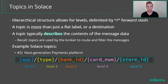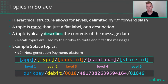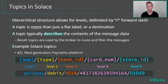For a next-generation payments platform, you need to be able to do credits and debits, so that should be part of your topic string. Maybe the bank ID where the transaction is destined for, the card number as part of the topic string, and the store ID where the point-of-sale terminal is located. These could all be part of the topic.